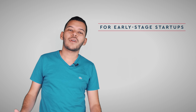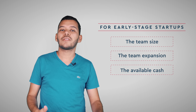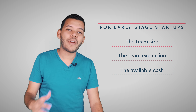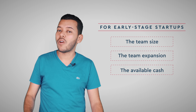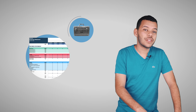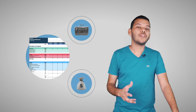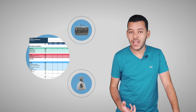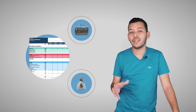For early-stage startups, the model should take into account the team, the team expansion, and compare it to the available cash — perhaps from a round of funding — to understand what the exact company runway is. If you've done your model right, you should be able to scale your team and your budget, understand the revenue impact of those changes, and measure how much that will affect your runway.